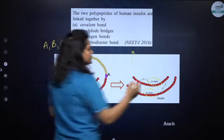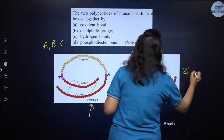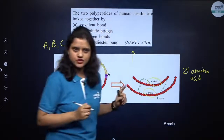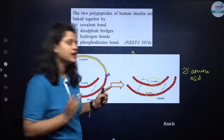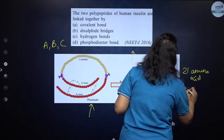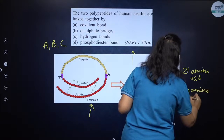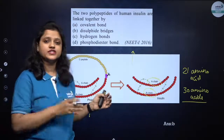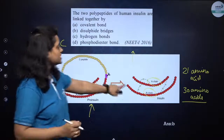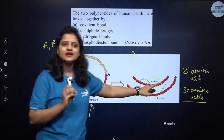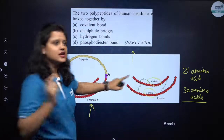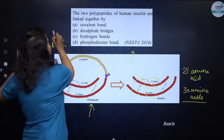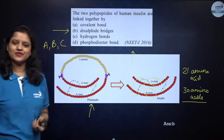The A chain is made up of 21 amino acids, and the B chain is made up of 30 amino acids, so overall insulin is made up of 51 amino acids. The A and B chains are connected together by disulfide bonds. So the correct option for this question is B — disulfide bridges.